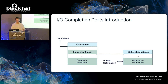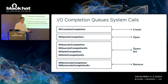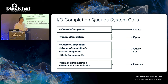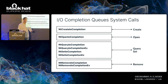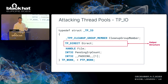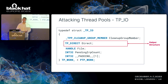The kernel exposes few system calls to interact with completion queues: a create system call, an open system call to open an existing queue, query and set system calls — getter and setter for the kernel object — and a remove system call used to remove an entry from the queue. Keep in mind the set system call, which is used to queue a notification to the queue. I'll use the TPIO work item as an example, but note that the same concepts apply to the other asynchronous work items as well — they are all queued in a very similar manner.